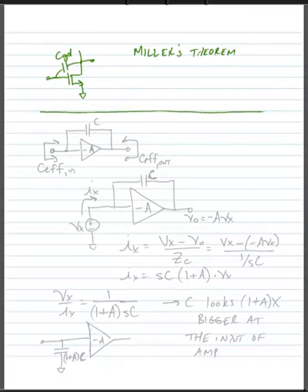So we'll look at a more generic form instead of just looking at a single transistor. Let's say that we have an amplifier that has a gain value of minus A, so it's got an inverting gain with a magnitude of A, and we put a capacitor C across this amplifier.